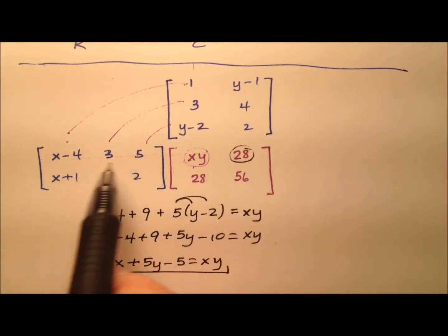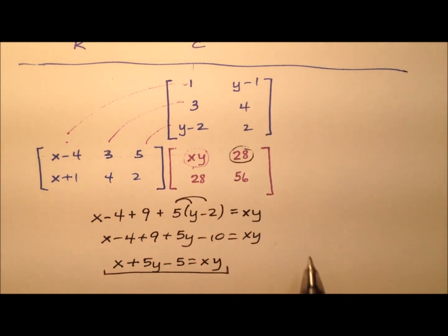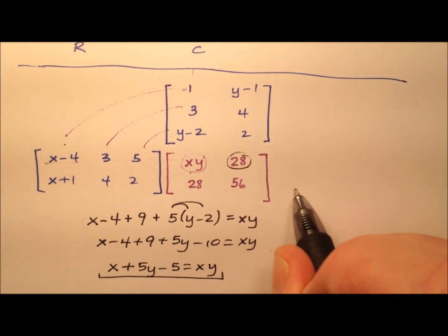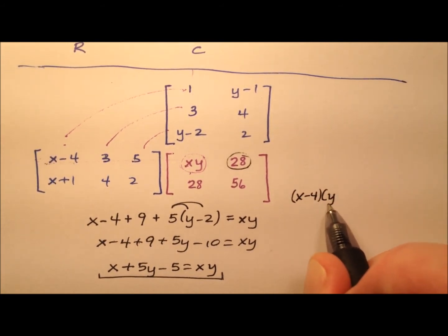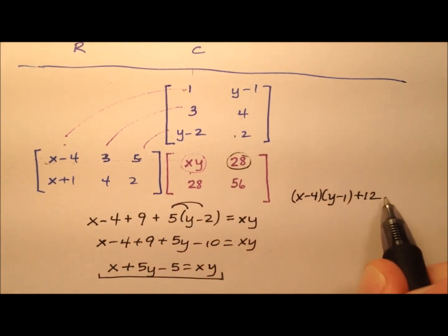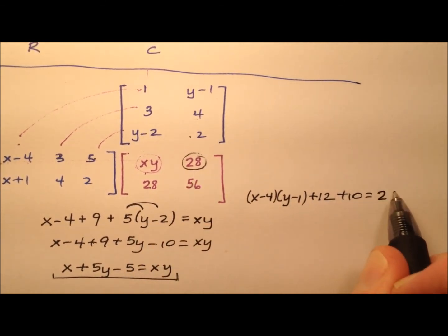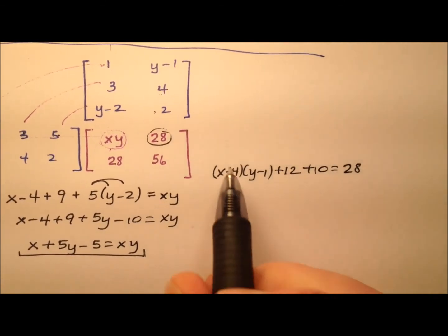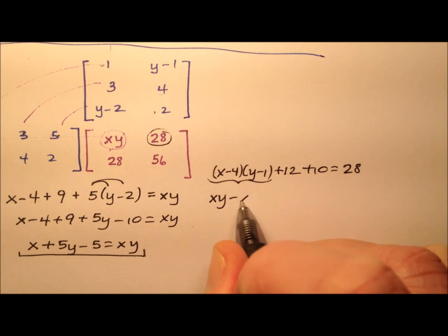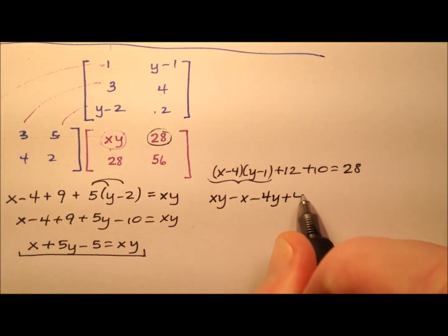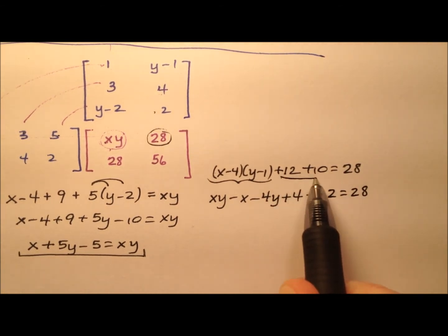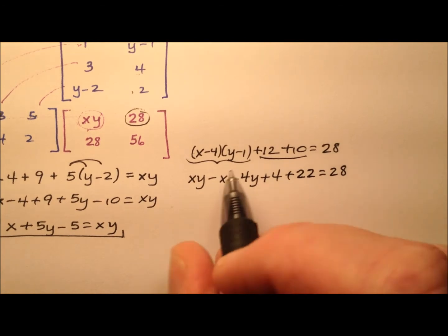So let's look at this 28 then here, we're going to come across this row and down this column. So when I do that, the first entry with this first entry, that looks like it will be (x-4)(y-1), and then 3 times 4 is 12, and 5 times 2 is 10, and that's going to equal that entry of 28. So if we go ahead and do this binomial multiplication, I'll end up with xy-x-4y+4+22 equals 28, and that 22 of course came from right there, the 12 and the 10.